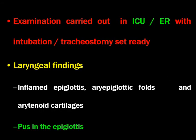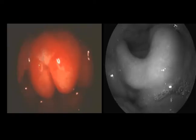Cervical lymphadenopathy is an important criterion that separates acute supraglottitis from inhalation of a foreign body. Examination should be carried out in the ICU or emergency room with intubation and tracheostomy set ready, because the child may go into laryngospasm during examination. Laryngeal findings on examination include inflamed epiglottis, peri-epiglottic folds, and arytenoid cartilages — supraglottic laryngitis. Sometimes there may be an abscess in the epiglottis. On visualization, the epiglottis appears very swollen; the true vocal cords are not visualized; there is pooling of saliva; and a narrowed airway is seen.